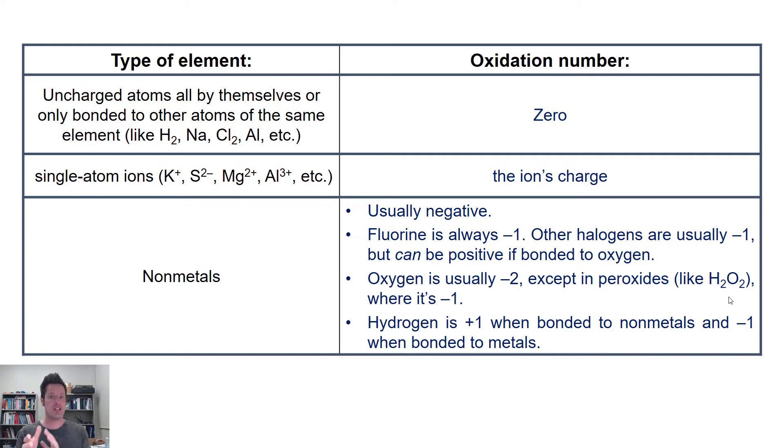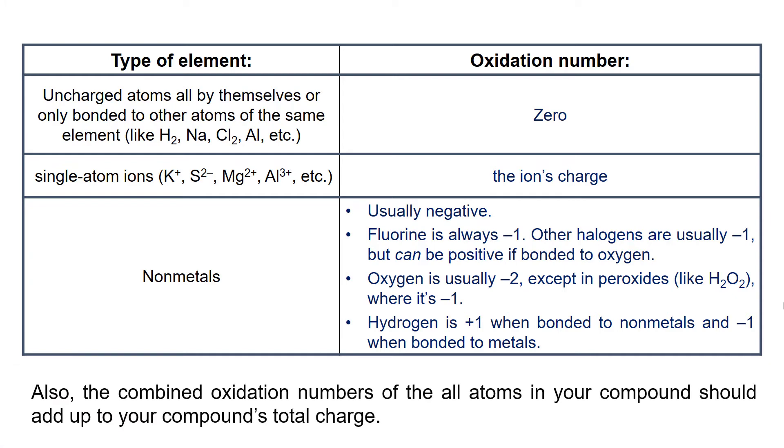Hydrogen's oxidation number is plus one when it's bonded to nonmetals, and minus one when it's bonded to metals. And the combined oxidation numbers of all of the atoms in each compound should add up to be equal to that compound's total charge. So these are the oxidation number rules.